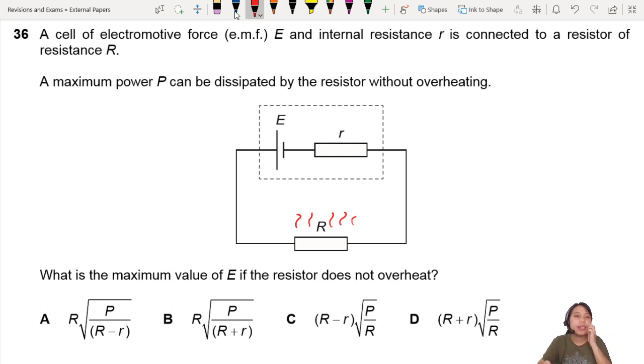So that means your resistor down here is dissipating power. It's getting hot. That's why it's dissipating power. But there's a maximum limit to it.